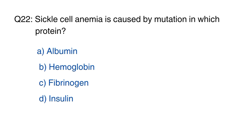Question number 22. Sickle cell anemia is caused by a mutation in which protein? The right option is B, hemoglobin.